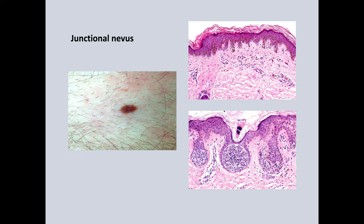I thought it would be appropriate to remind first-year residents of what nevi look like. This is a junctional nevus — a nice, uniform brown color, very small. On the top right you can see a very early junctional nevus with little nests arising at the tips of the rete ridges, and on the bottom picture you can see very well-formed nests of uniform nevus cells at the tips of the rete ridges. In many atypical melanocytic proliferations, the nests arise not just at the tips but at the sides and sometimes over the tops of the dermal papillae.